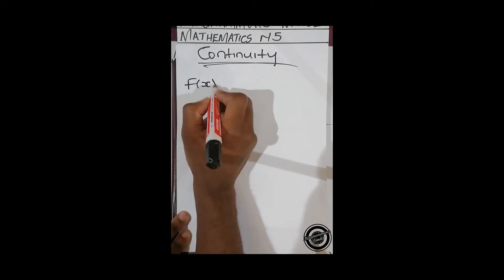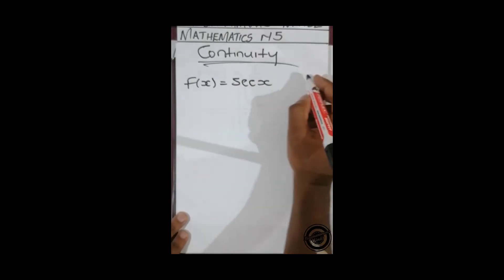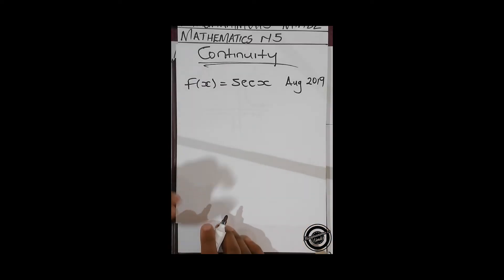For example, we are given f(x) equals sec x, this from a past paper, August 2019. Then we are asked if this function is continuous. The first thing that you have to know is that sec x is actually one over cos x.